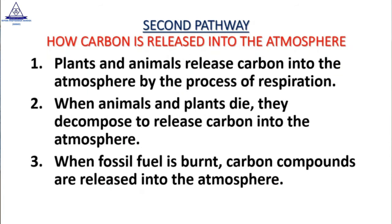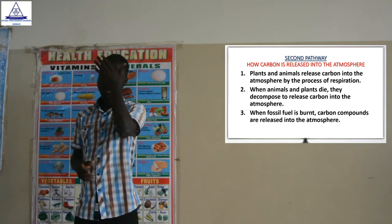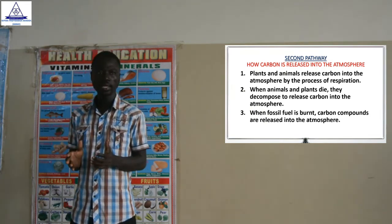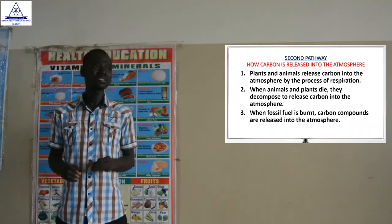The third way by which carbon is released into the atmosphere is when carbon compounds in fossil fuels are burned. When I talk about fossil fuels, I am talking about coal, petroleum products, and natural gas. When they have been burned, they also release carbon into the atmosphere. So these are the two main pathways through which carbon is removed from the atmosphere and returned into the atmosphere.